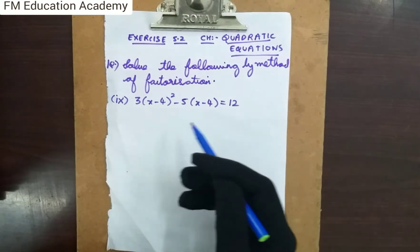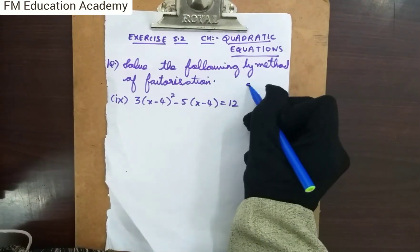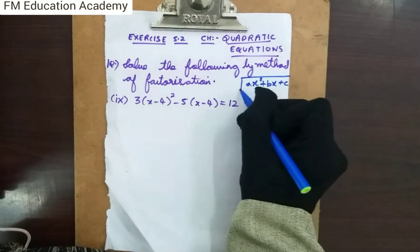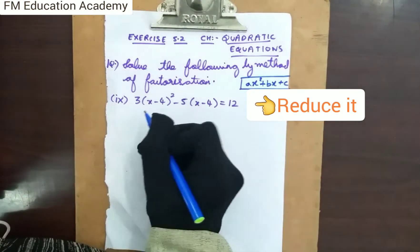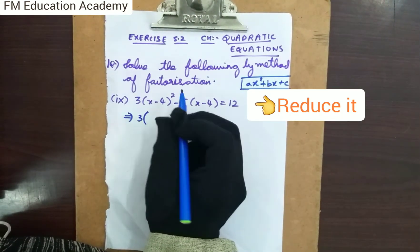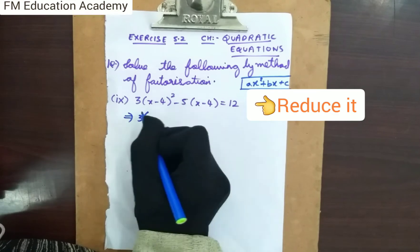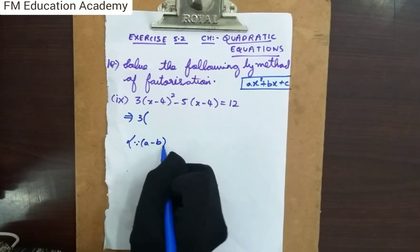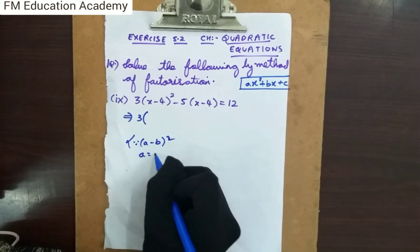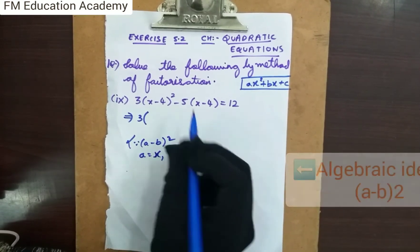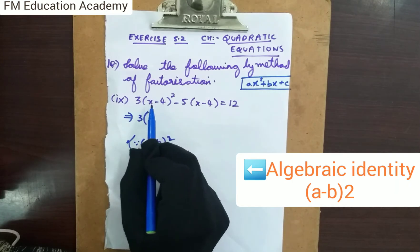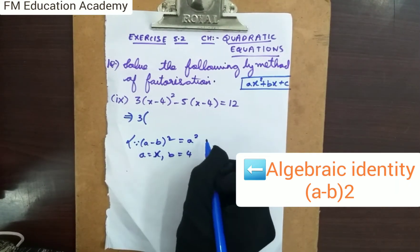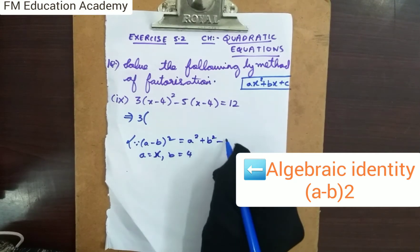Clearly I can see that it is not in the standard form of ax² + bx + c, so I will reduce this equation to that form. I know (x − 4)² is of the form (a − b)², where a is x and b is 4. So (x − 4)² follows the identity (a − b)² = a² + b² − 2ab.